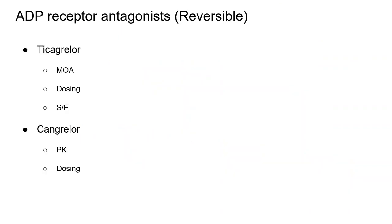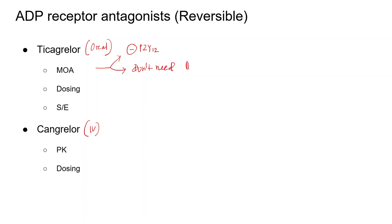The reversible ADP receptor antagonists are ticagrelor and cangrelor. Cangrelor is an IV drug — the only parenteral ADP receptor antagonist — while ticagrelor is oral. They also inhibit the P2Y12 ADP receptor. Importantly, they do not need activation — they are not prodrugs — so they produce a predictable response.